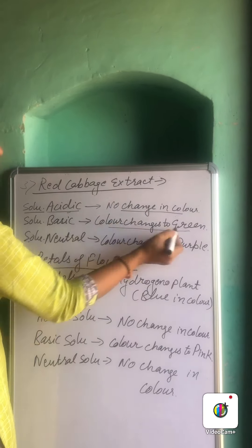Similarly, vanilla extract is also used as an olfactory indicator. When vanilla extract is added to an acidic solution, the smell remains the same. When added to a basic solution, the smell gets destroyed. In both cases, similar conditions apply — if the smell remains the same, the solution is acidic; if the smell disappears, the solution is basic. Okay students, that's all for today, thank you.